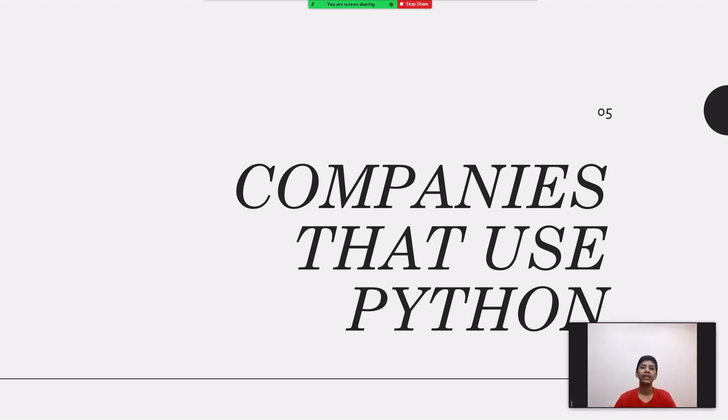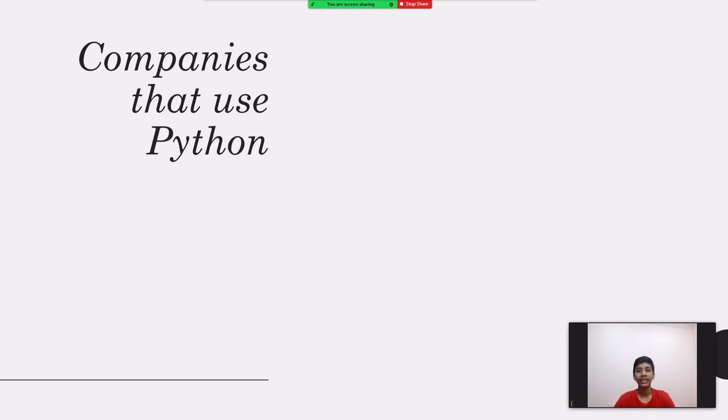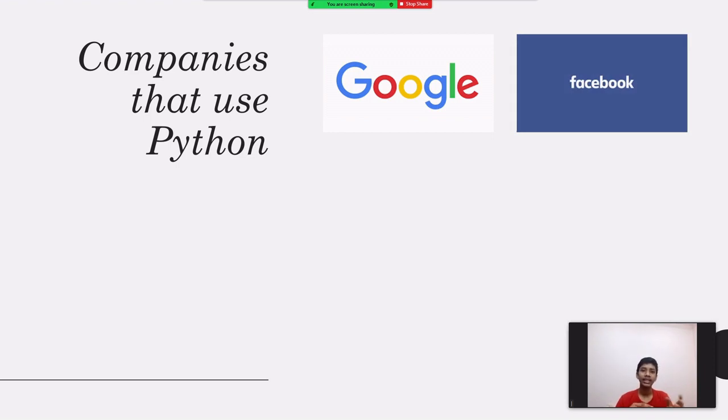For the companies which use Python, there are many companies, but these are the most famous ones. The first one is Google. Google has been a great supporter of Python ever since the very beginning. They explain that they use Python for its ease of maintenance and relatively faster delivery. And also Facebook. The engineers at Facebook are keen supporters of Python, making it the third largest popular language in the social media chain. And the famous social media platform Instagram. In 2016, Instagram posted that they were running the world's largest website on Django, which is written entirely in Python.